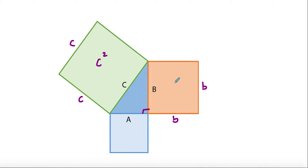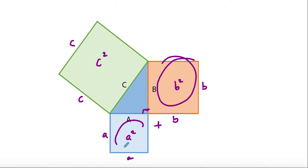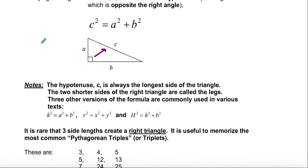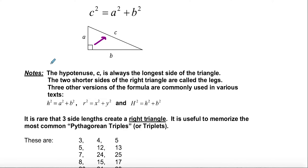If this side is b, then length times width gives b². And if this side is a, length times width gives a². Pythagoras realized this only works if it's a right triangle — it has to have a 90-degree corner. If you add the two smaller squares together, their area equals the area of the largest square — that's where the formula comes from.